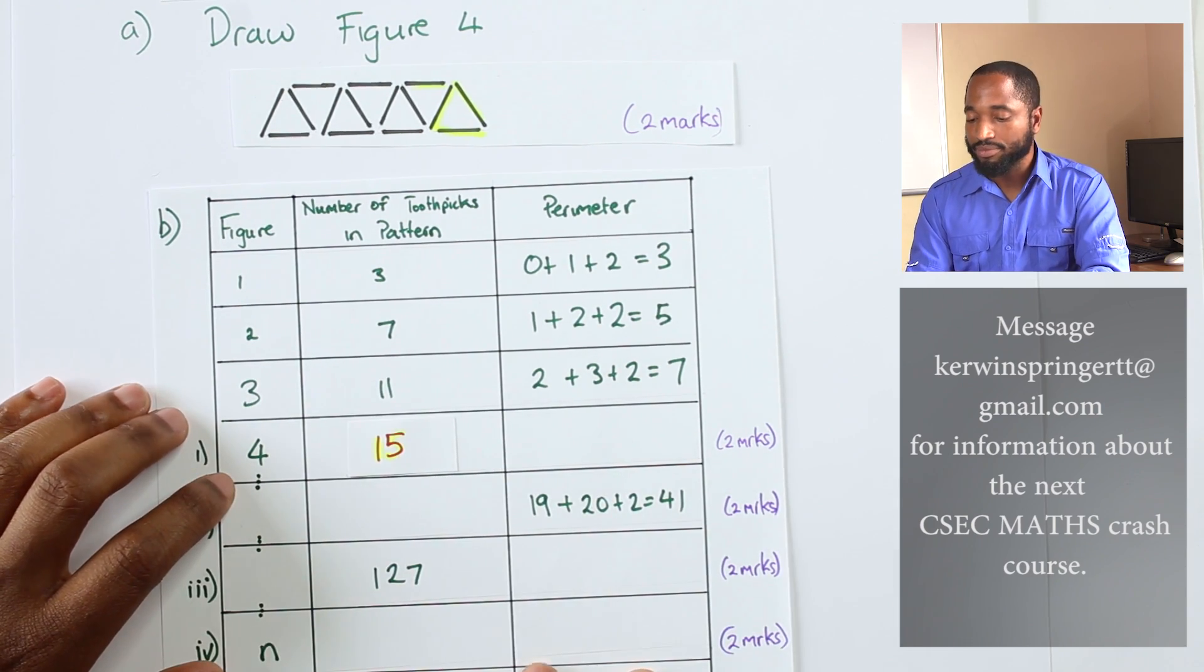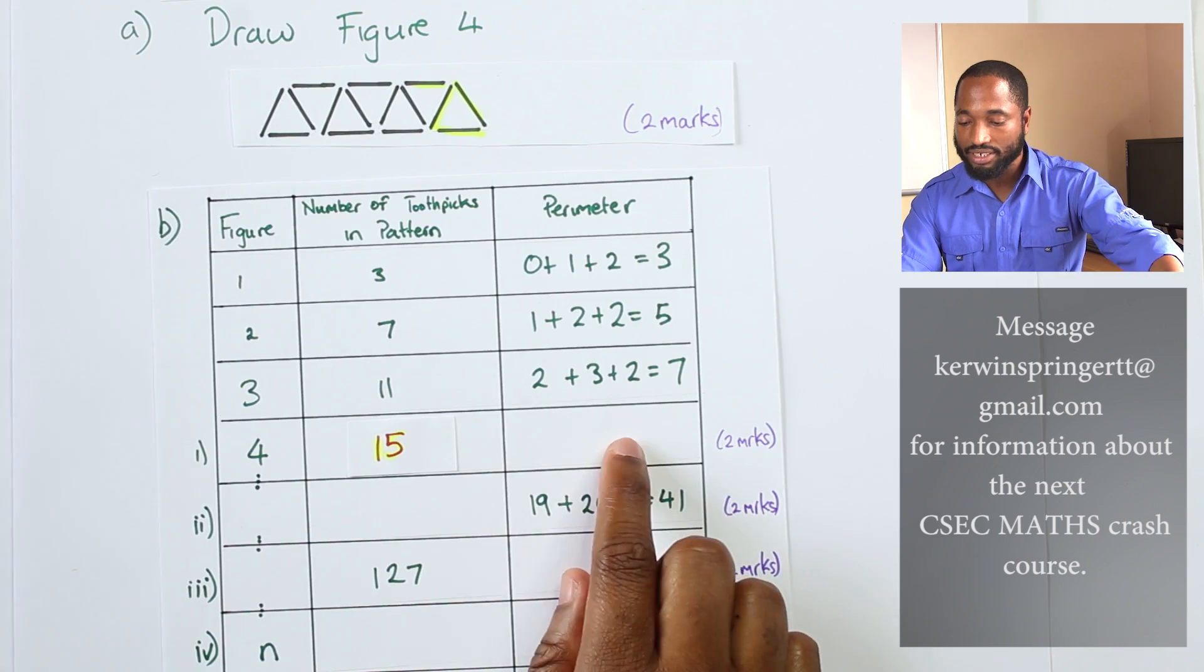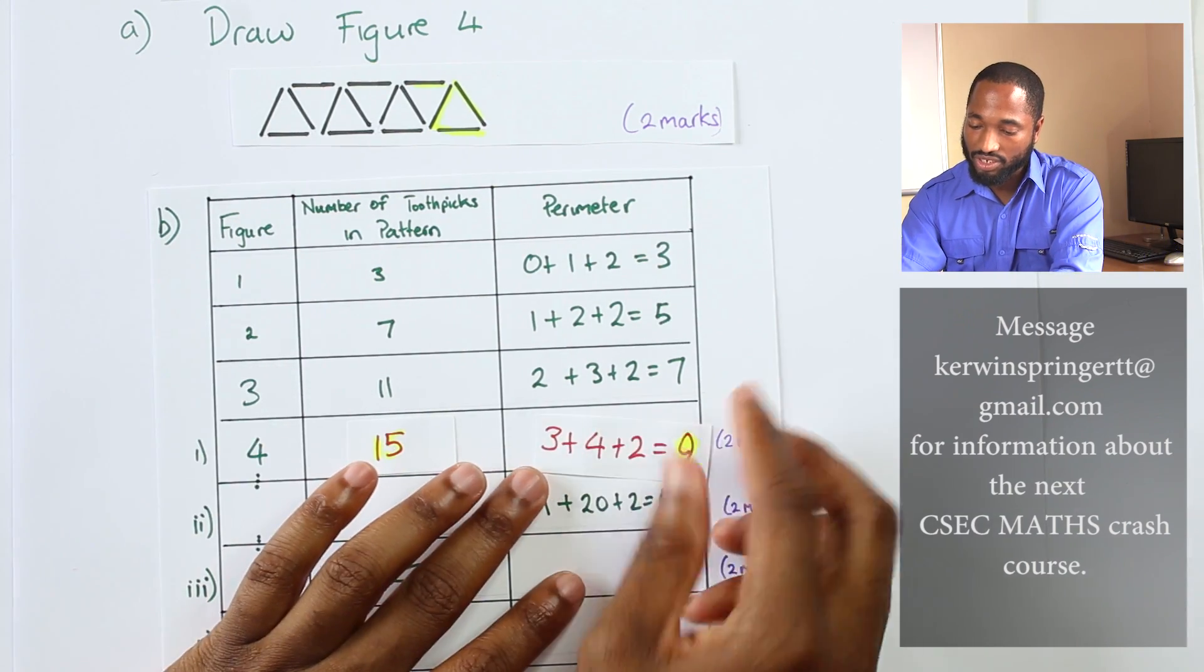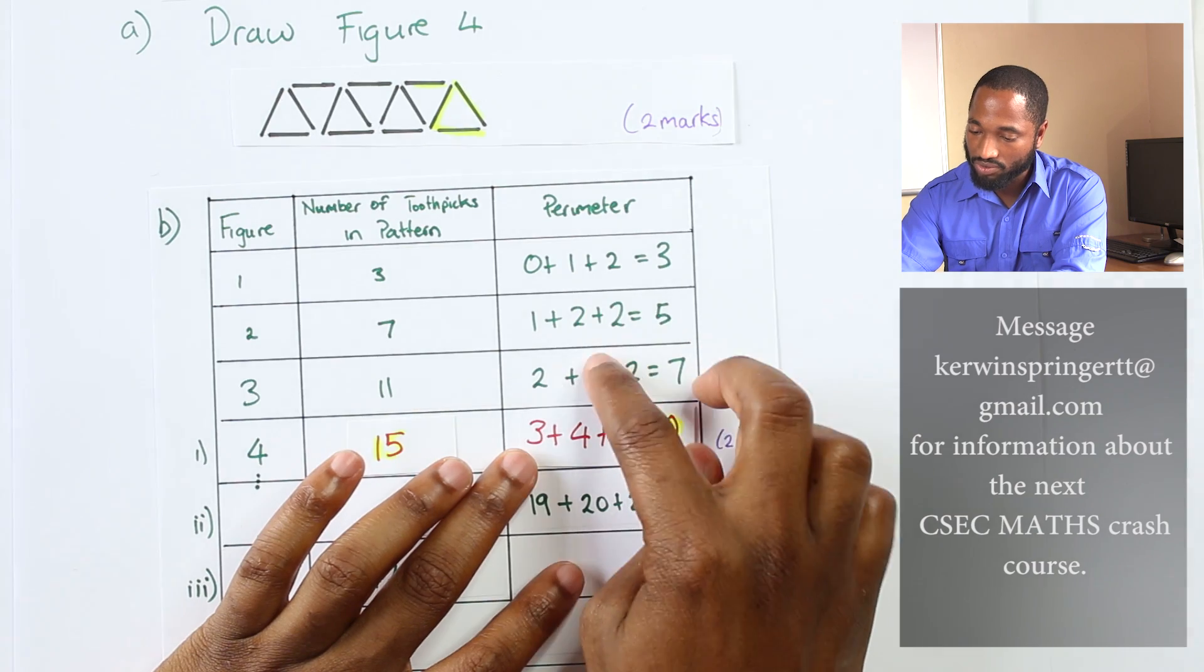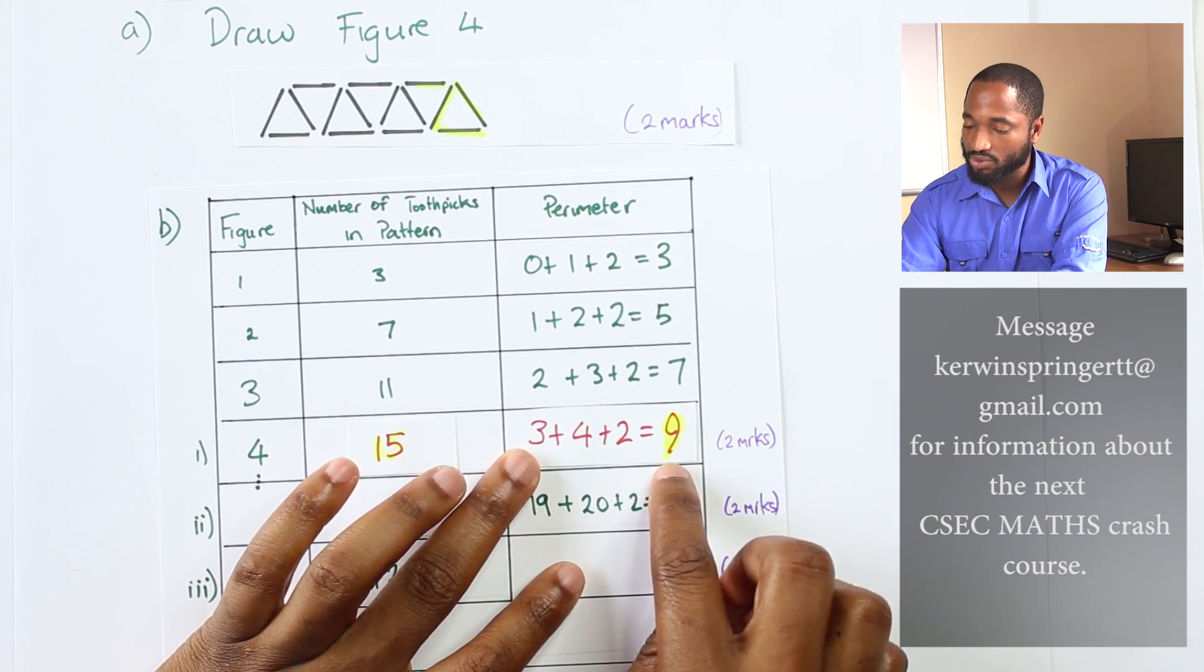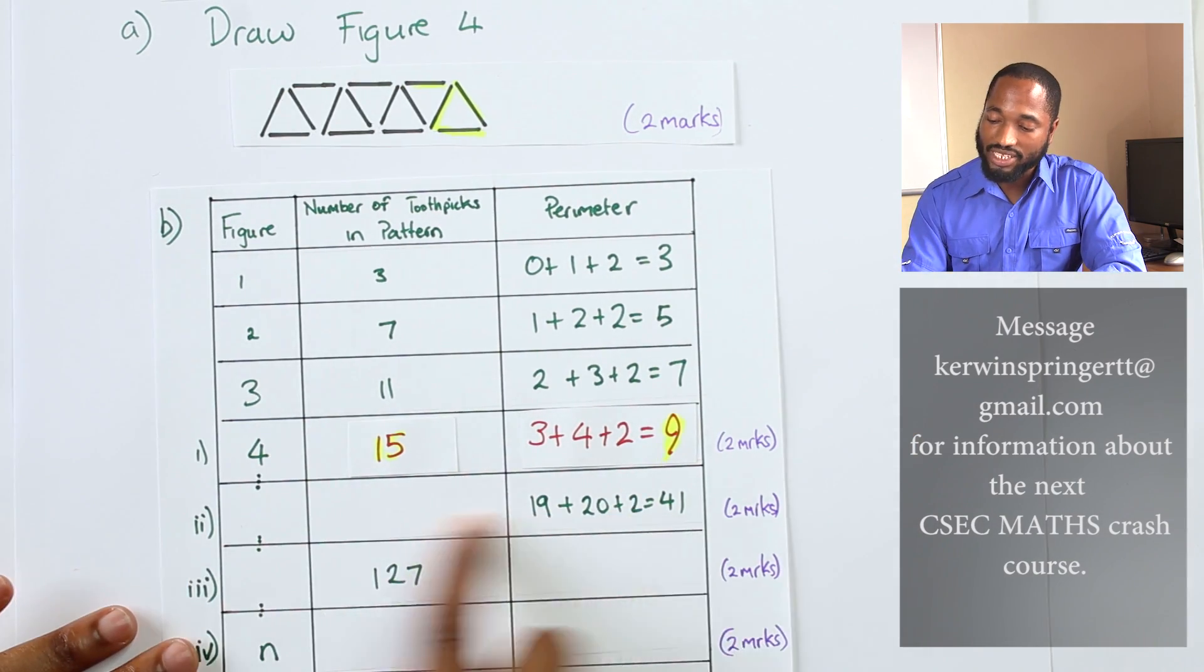And this number here, this is going to be, we continue the pattern: 1, 2, 3, 1, 2, 3, 4. And this stays 2, so you can get that now.